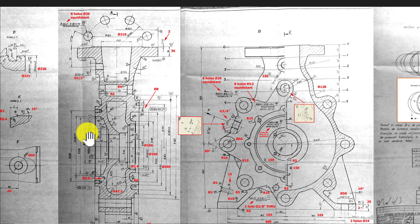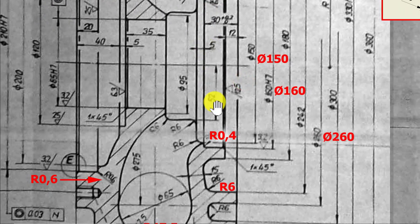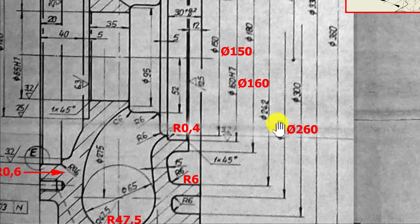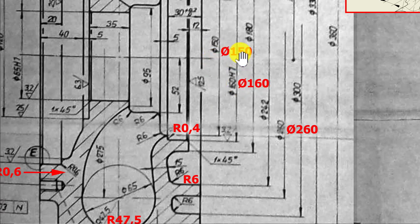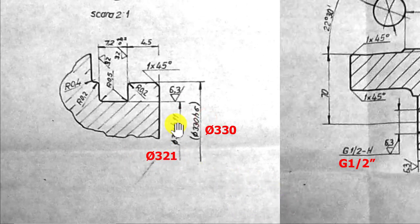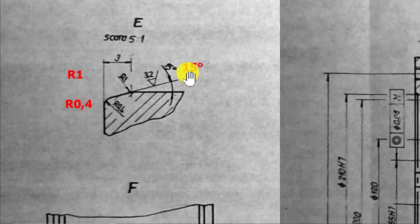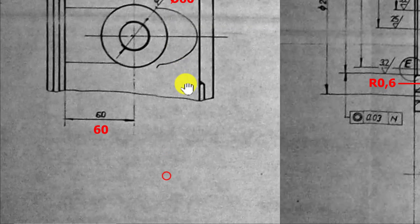I added dimensions because some are not well visible. For instance, 260 diameter is repeated here. Here you can see 242, but here maybe you cannot — diameter of 160, diameter of 31. Other things: diameter here — 321, 330 — these are visible, no problem. Here: 15 degrees, radius 1, radius 0.4, diameter of 60, distance of 60.